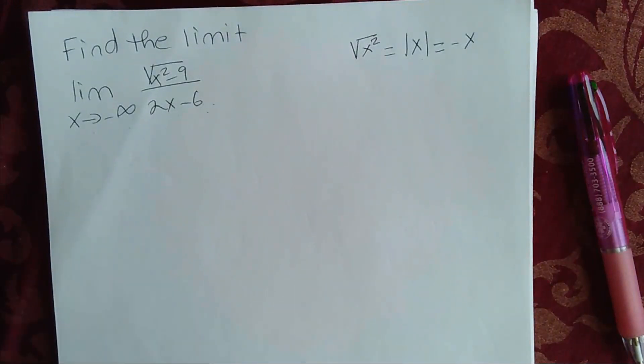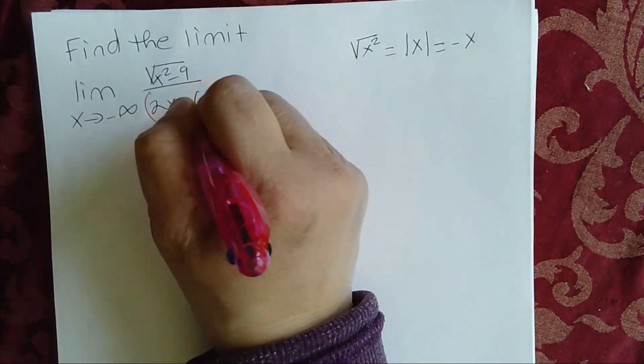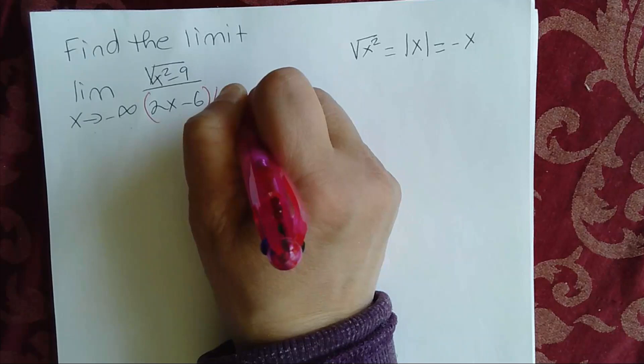So what we have to do here is we have to divide both the numerator and the denominator by negative x.